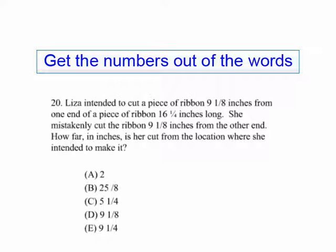In this case, it tells us that she intended to cut a piece of ribbon 9 1/8 inches from one end of a piece of ribbon that is 16 1/4 inches long. She mistakenly cut the ribbon 9 1/8 inches from the other end. How far in inches is her cut from the location where she intended to make it?